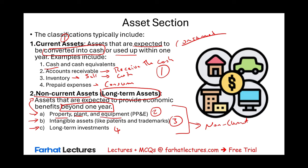Property, plant and equipment includes things like machinery, vehicles, computers, furniture, buildings, and land. Intangible assets are like patents and trademarks — assets that lack physical existence, in contrast to property, plant and equipment where the assets are tangible: you can see them, you can touch them.